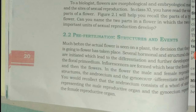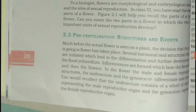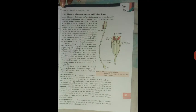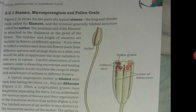In the flower, the male and female reproductive structures are the androecium and gynoecium. The androecium is the male part of the flower and the gynoecium is the female part of the flower. The androecium consists of a whorl of stamens and the gynoecium is the female reproductive organ.